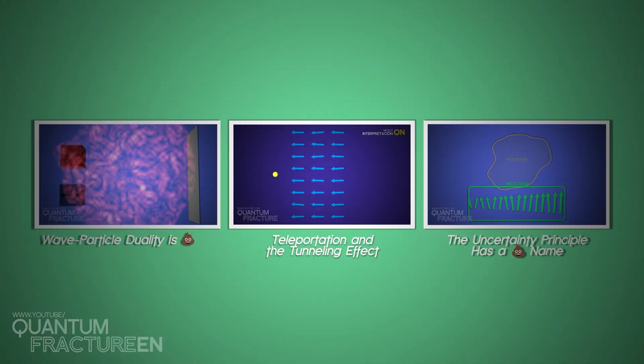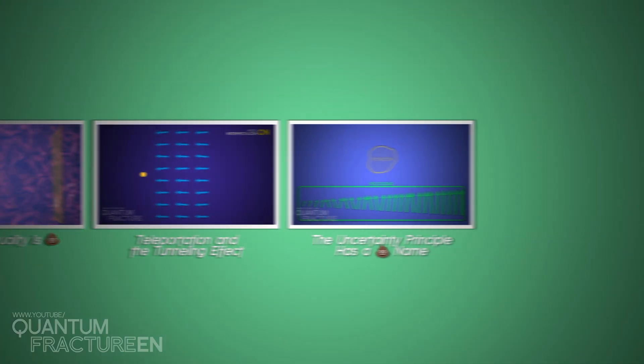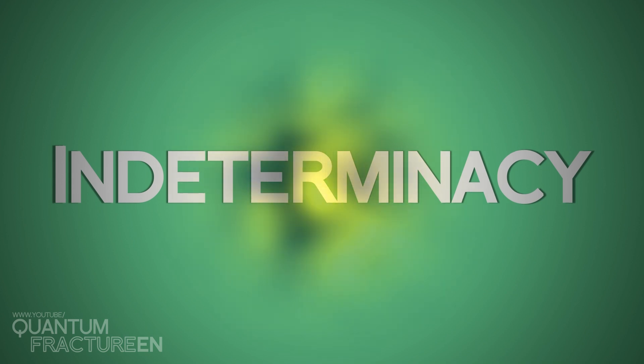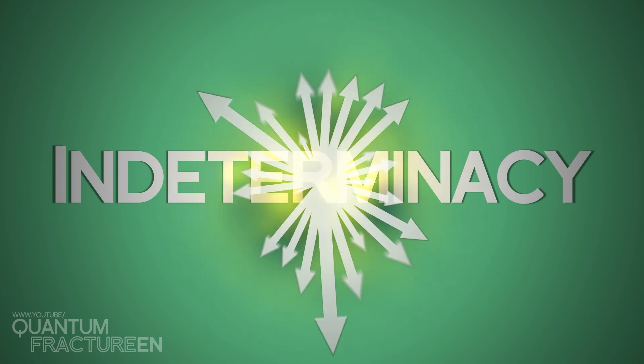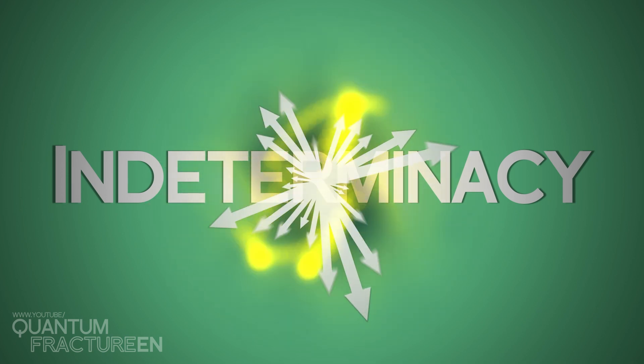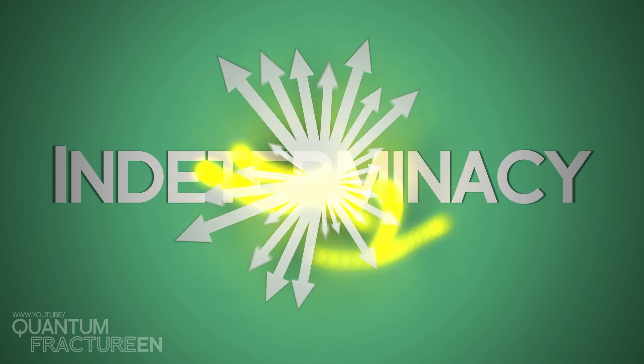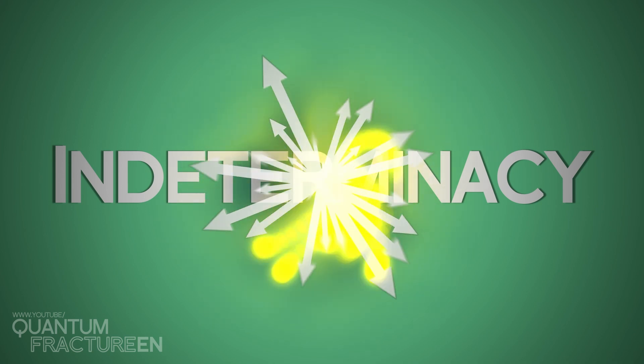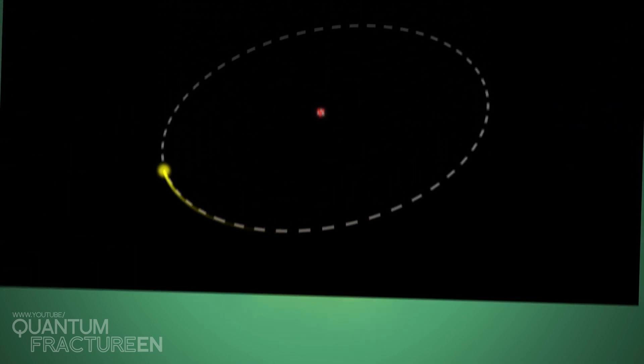We've already talked about this several times on our channel, but here's a quick recap. One of the biggest differences between the quantum world and the one we experience every day is indeterminacy. Quantum objects, like electrons, don't necessarily have to be at a specific point in space or move at an exact speed. Most of the time, these magnitudes are indeterminate. They have no specific value, and spin is one of them.